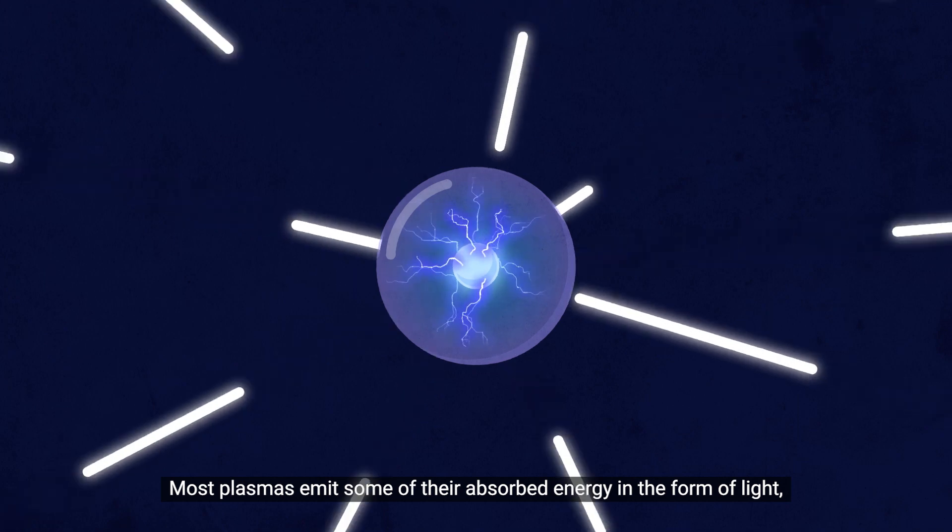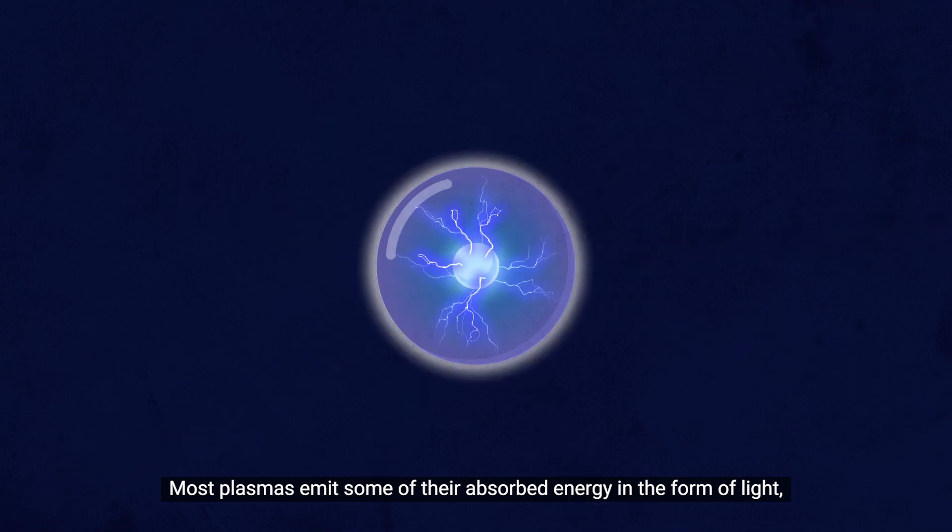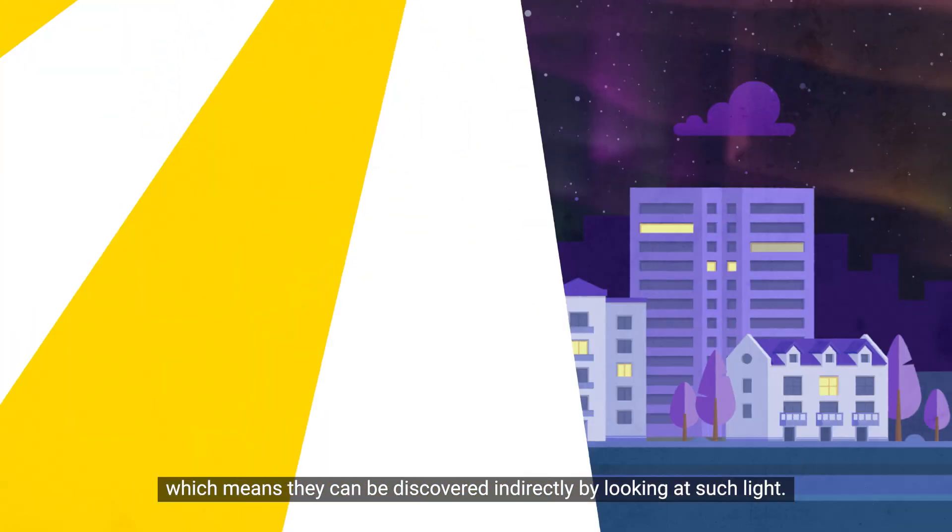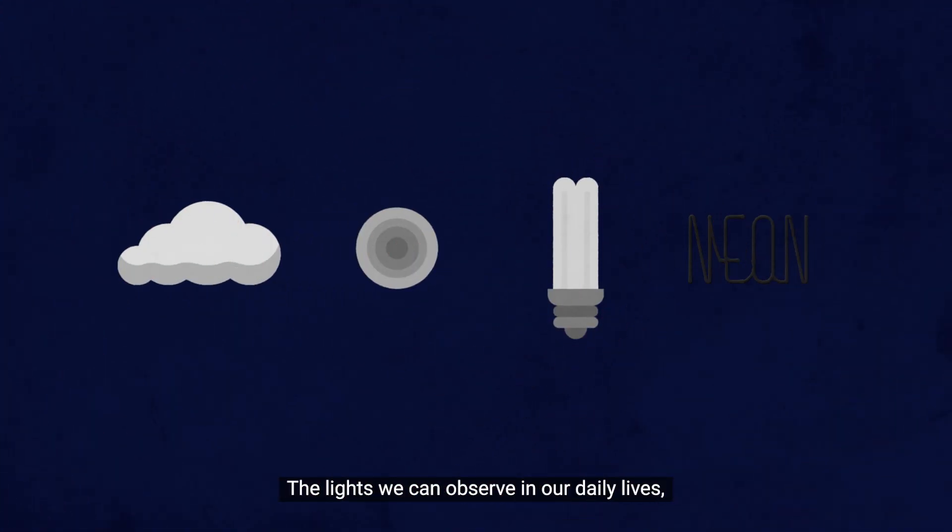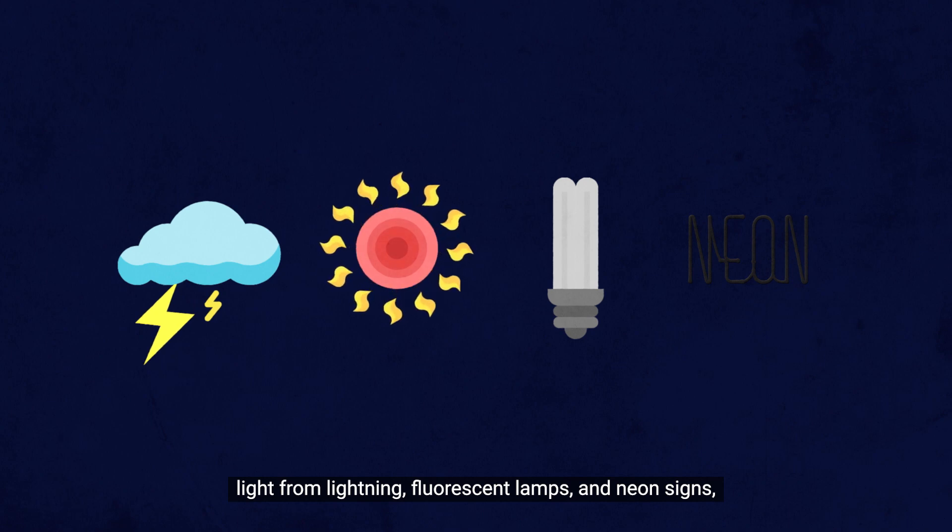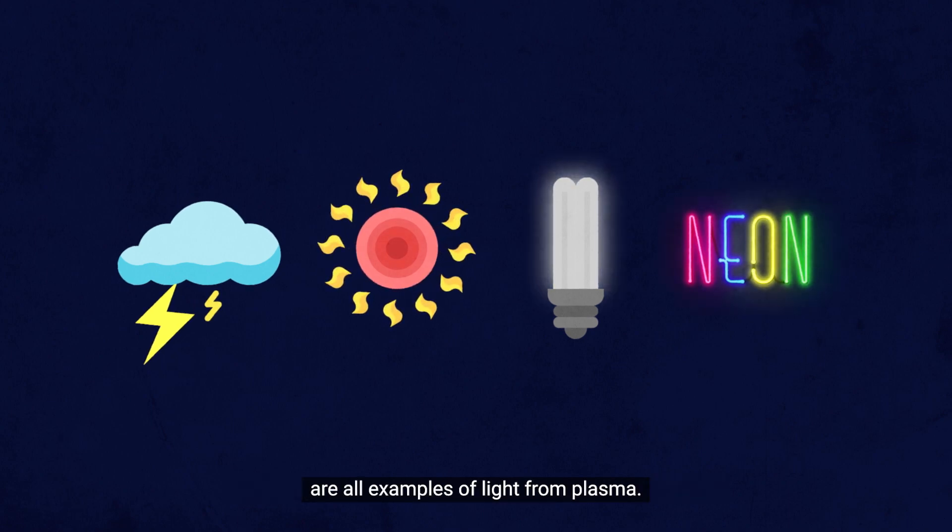Most plasmas emit some of their absorbed energy in the form of light, which means they can be discovered indirectly by looking at such light. The lights we can observe in our daily lives—light from lightning, fluorescent lamps, and neon signs—are all examples of light from plasma.